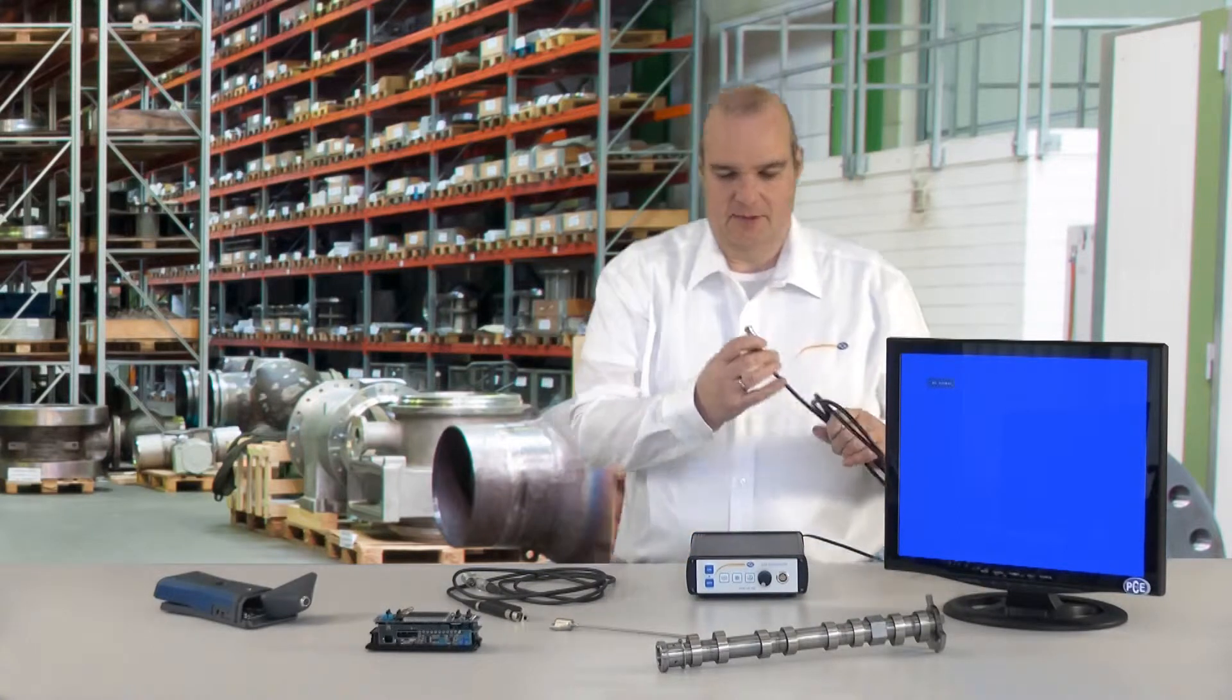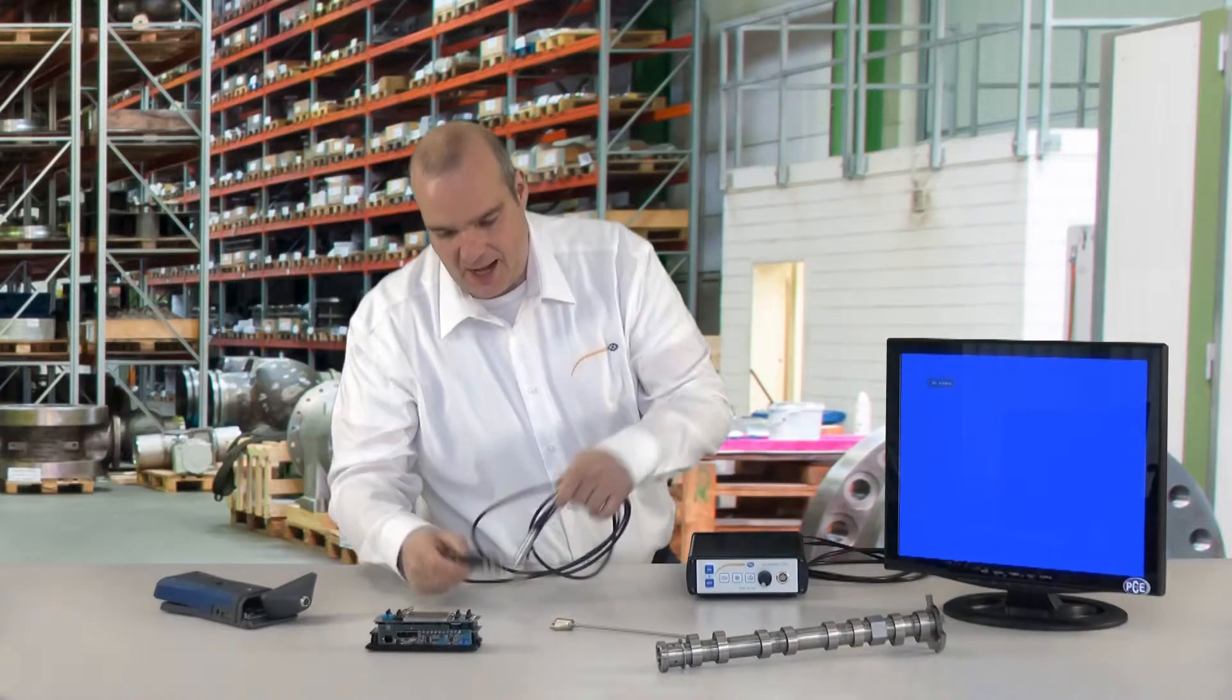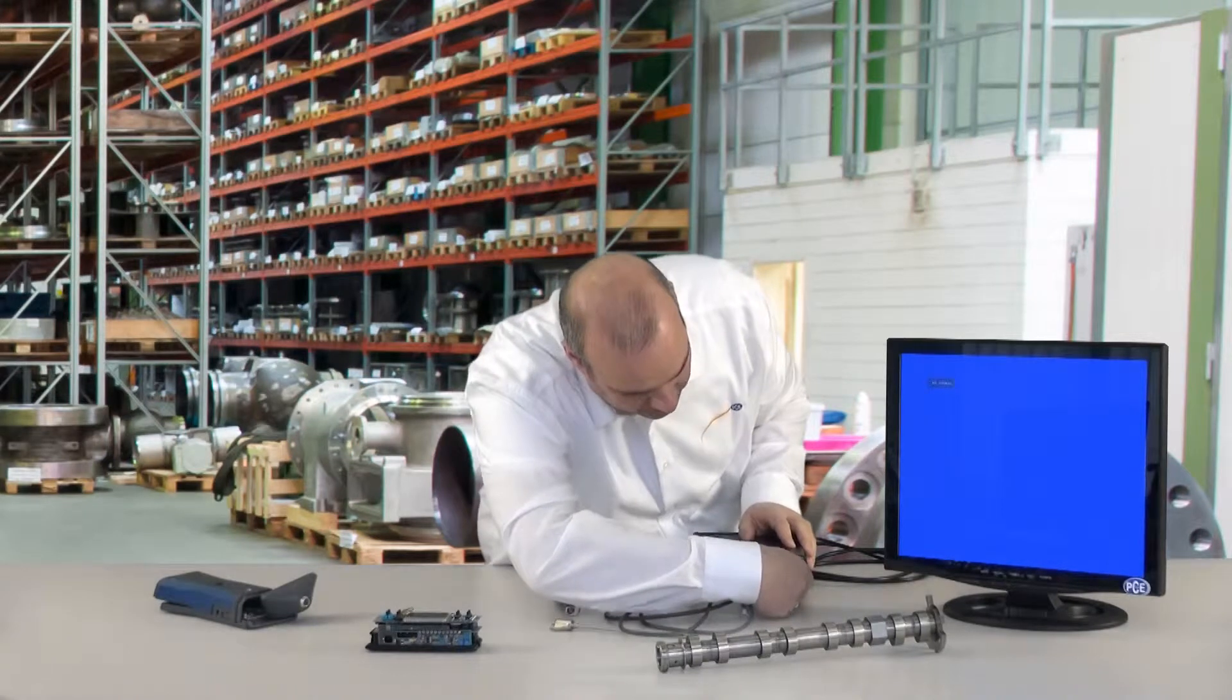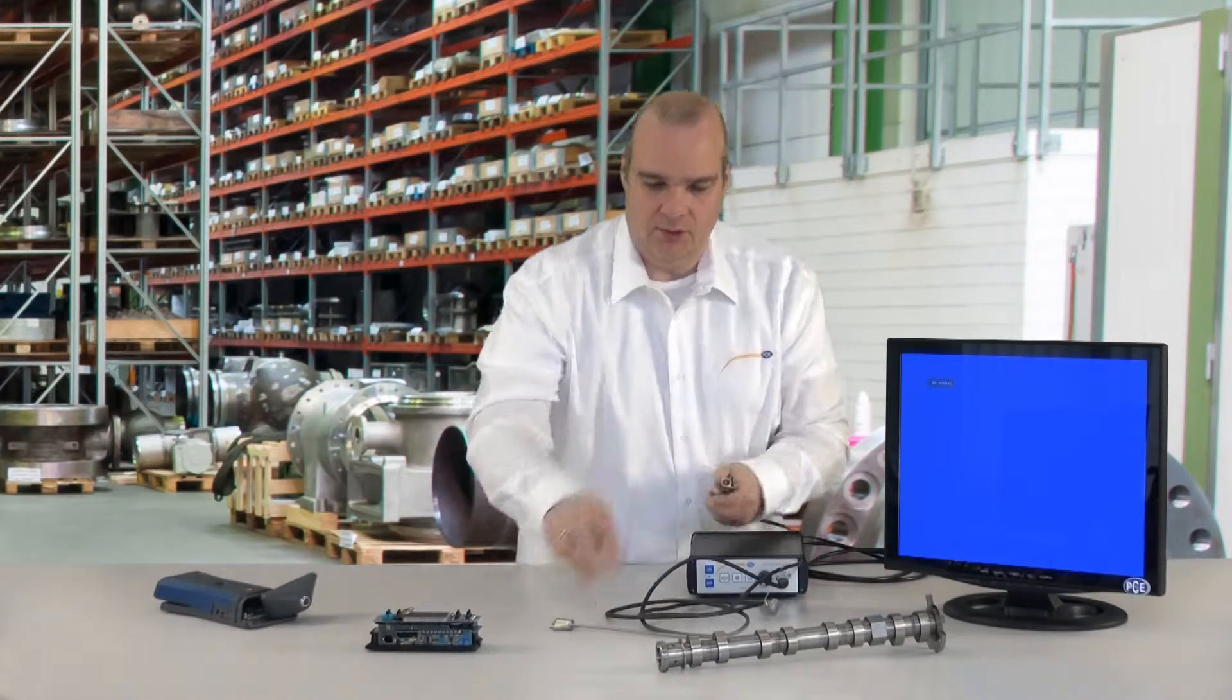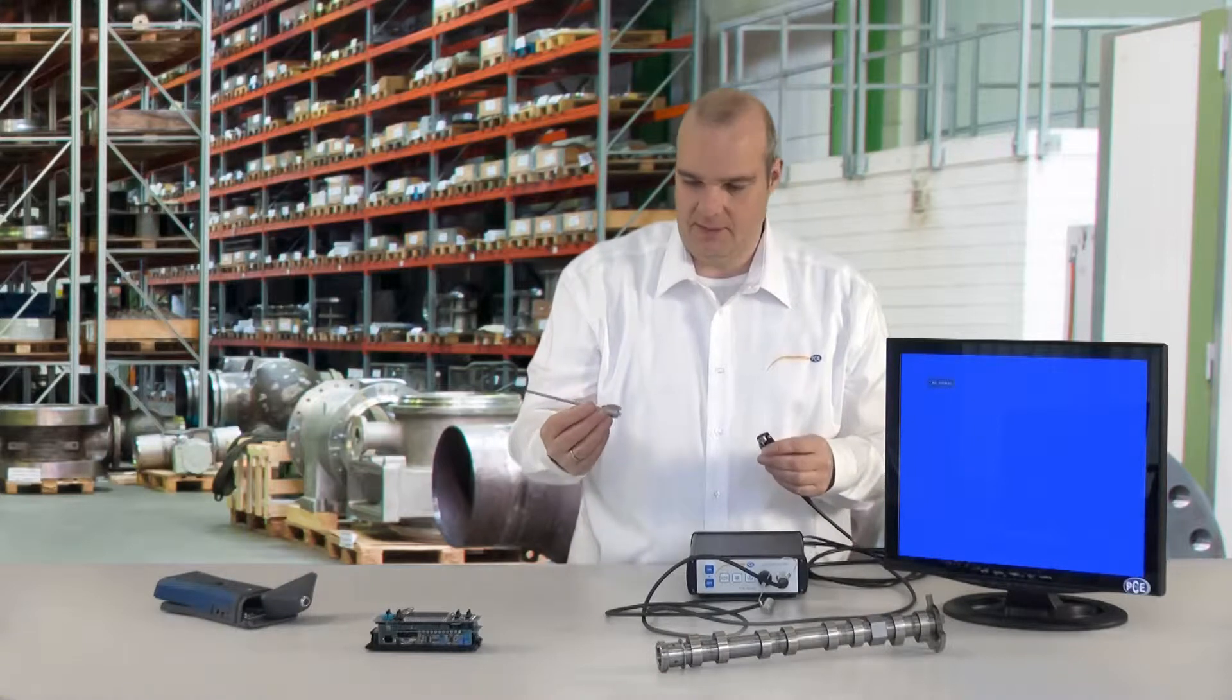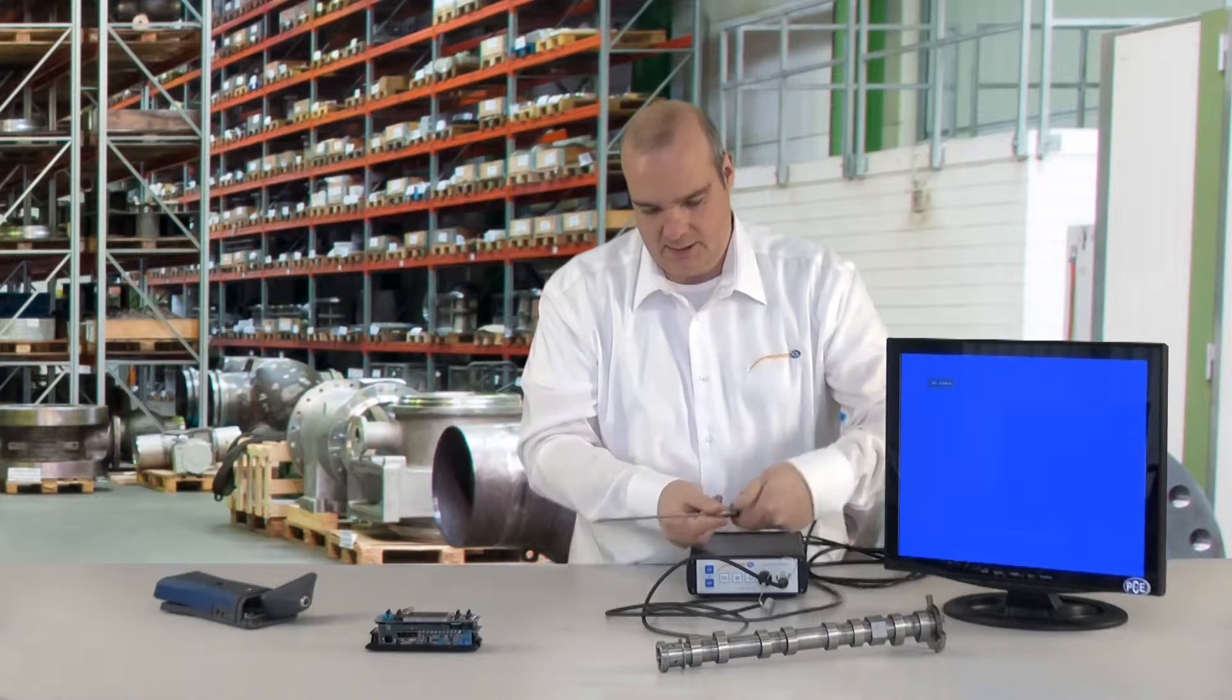And then the BNC cable for the monitor. I have the cable for the probe which I connect. Then take my matching probe. There are differences between 0.7 and 4 mm. It is simply put in and clipped closed.